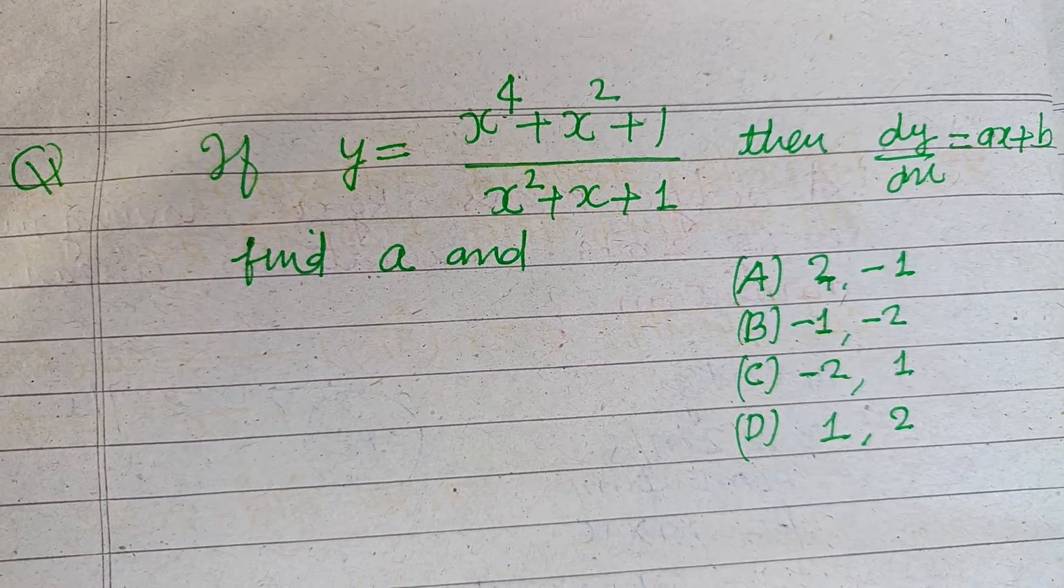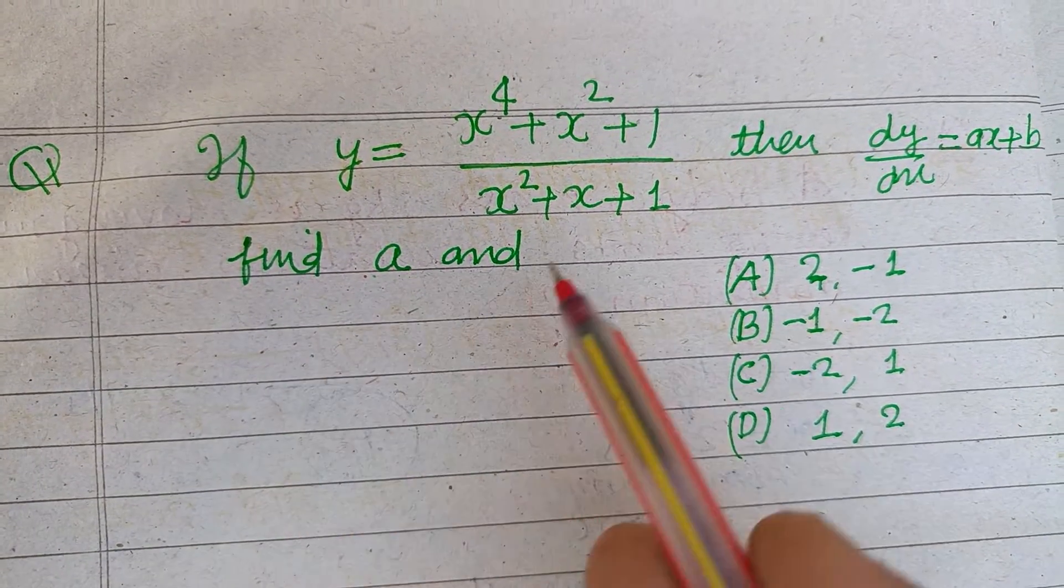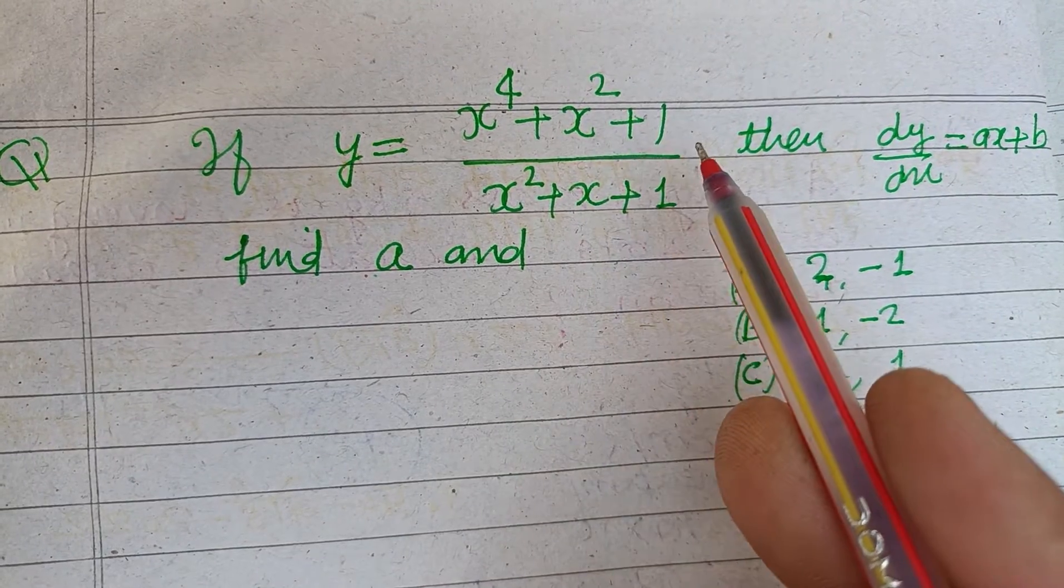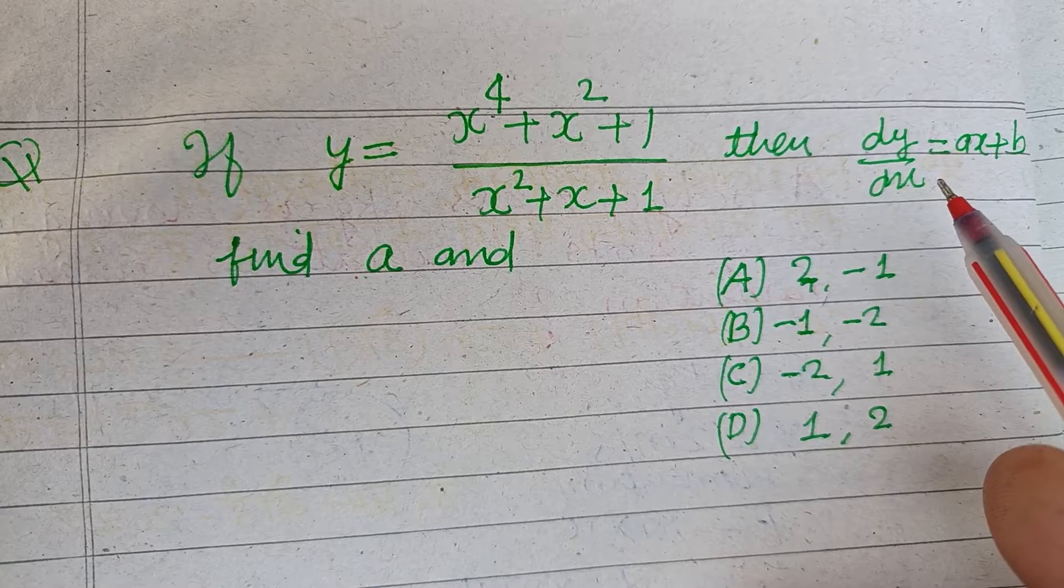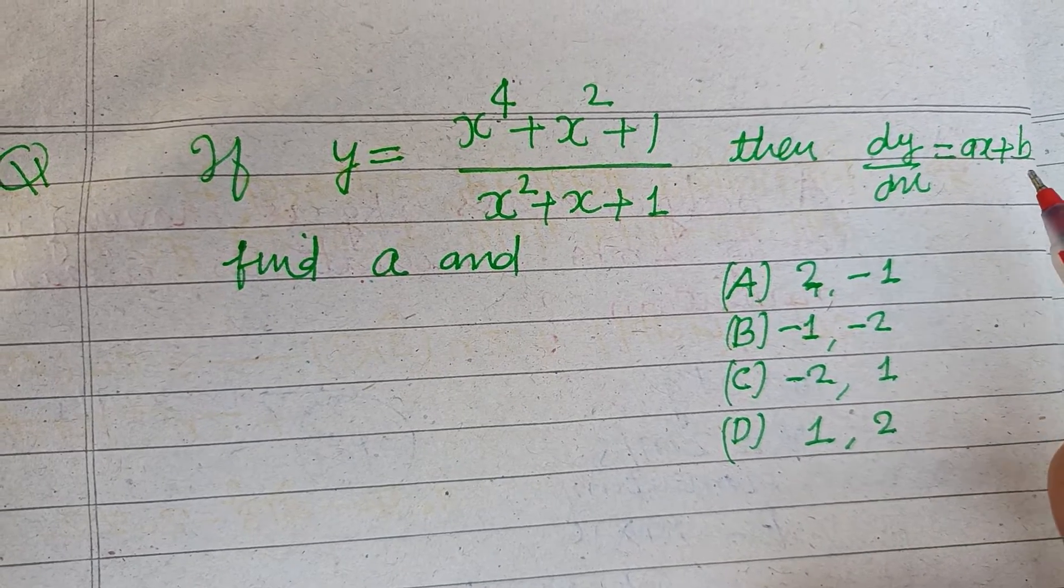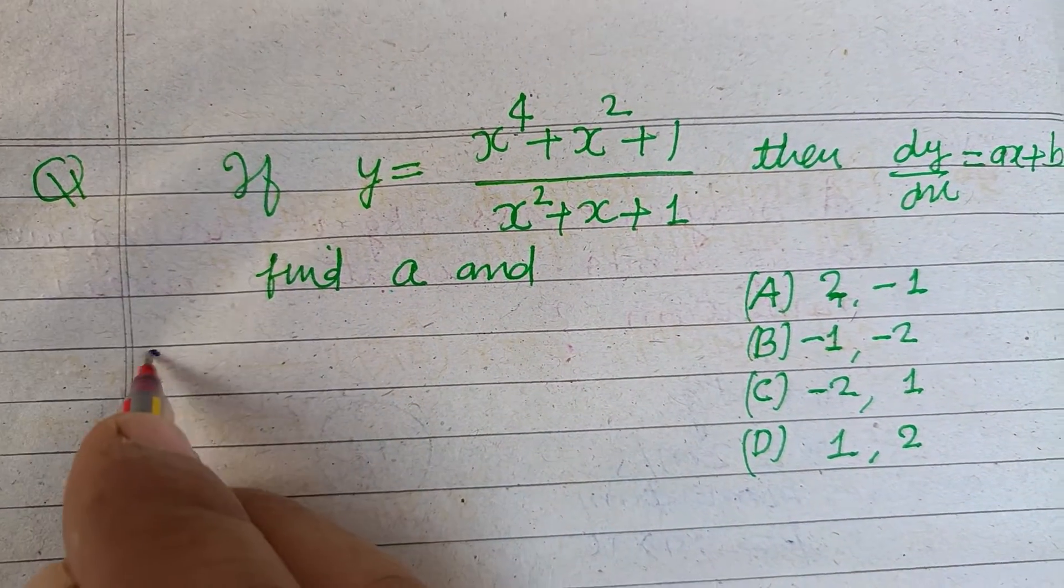Hello viewers, warm welcome to this YouTube channel. Question is: if y equals x to the power 4 plus x squared plus 1 over x squared plus x plus 1, then find dy by dx. Then dy by dx equals ax plus b. Find the value of a and b.